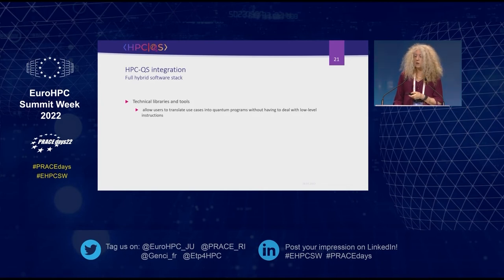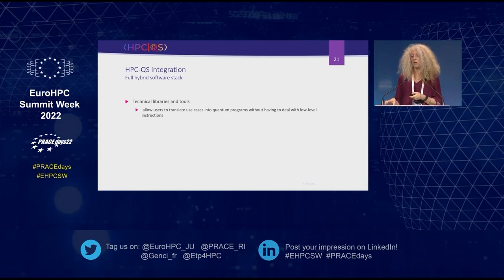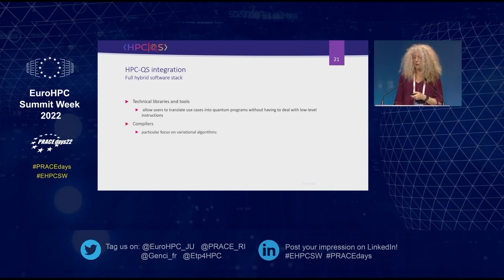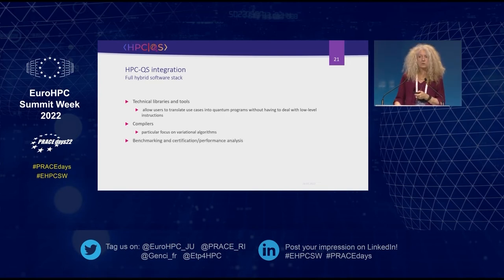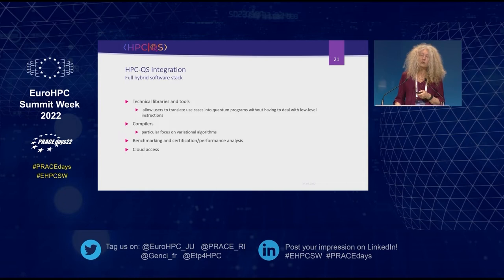This technical infrastructure is not sufficient on its own; we also need to develop technical libraries and tools to allow users to translate their use cases into quantum programs. We want to avoid users dealing with low-level instructions, so we will also develop compilers — starting with a focus on variational algorithms, then expanding. Benchmarking, certification, and performance analysis are important, and the whole infrastructure will be accessible via the cloud.